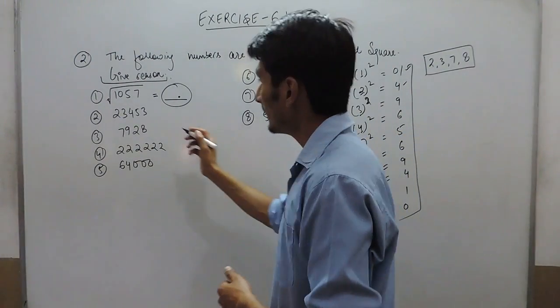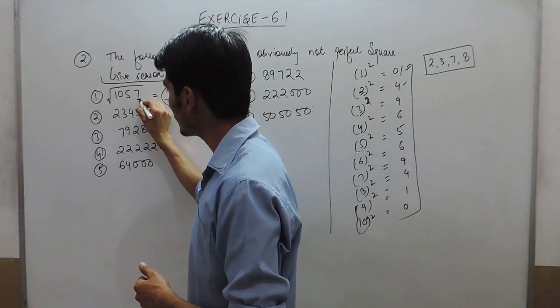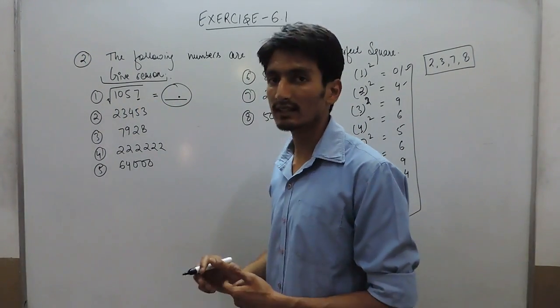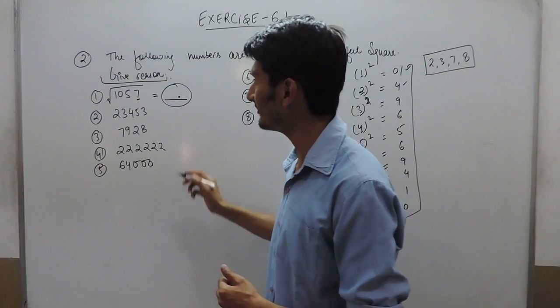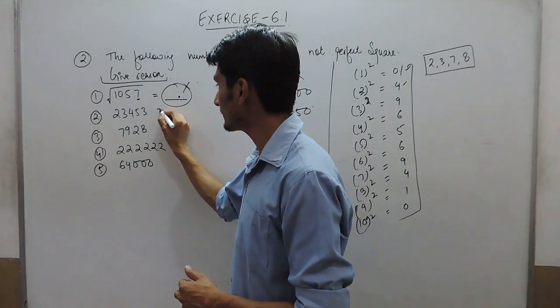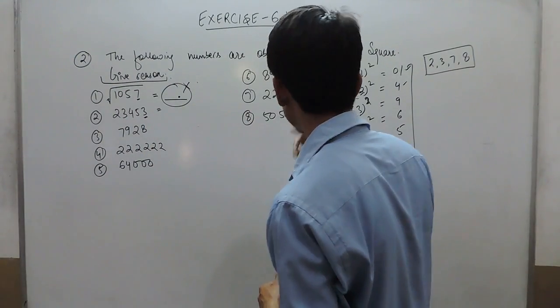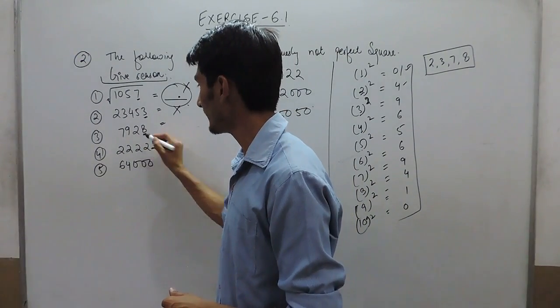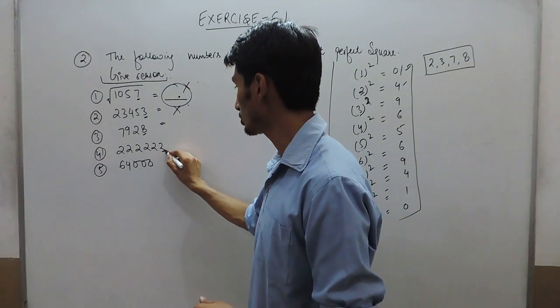So clearly, when we look at these numbers: because this one has unit digit 7, its perfect square cannot be found. Same case with this—it has unit digit 3, so it cannot be a perfect square. Here it is 8, here it is 2, so these cannot be perfect squares.